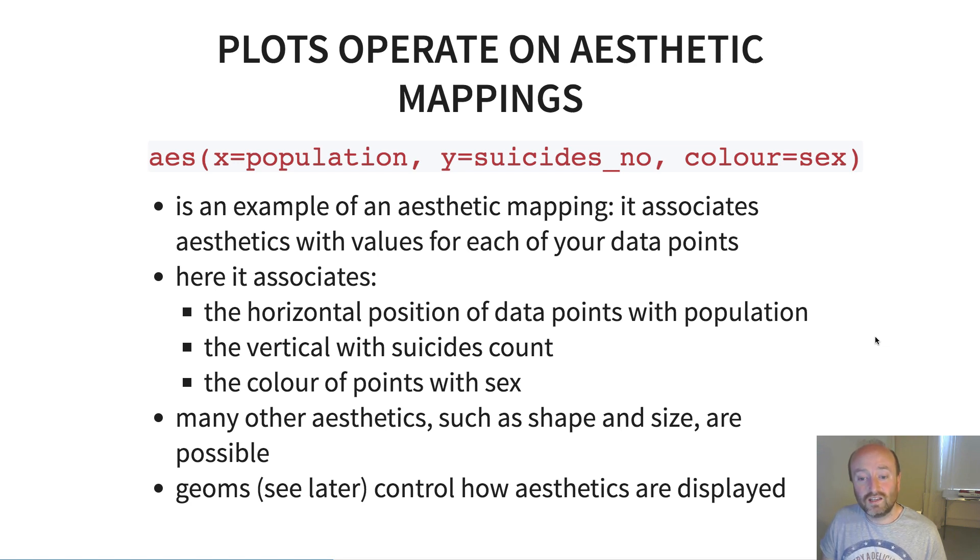And it associates the vertical axis with the count of suicides and then the color of points with sex. And so effectively what it's doing is it's just going through each of your rows in the dataset and producing a mapping of each of those to these particular aesthetics here. There are many types of aesthetics in the ggplot framework, such as shape and size. And geoms, as I said, control how aesthetics are displayed.